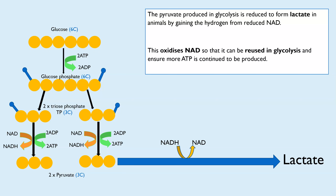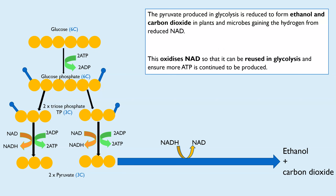In plants and microbes, the only difference is due to different enzymes involved — that stage results in ethanol and carbon dioxide being produced. But it's still the same idea: you get a net gain of 2 ATP and NAD has been oxidized again so glycolysis can continue. Ethanol is also toxic, so if this were to occur for long periods of time the ethanol would denature enzymes involved in glycolysis and all respiration would stop — so it can only occur for a short period of time.